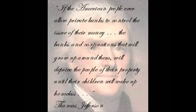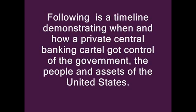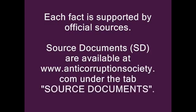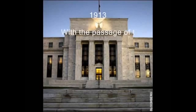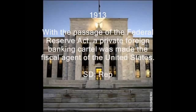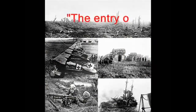If the American people ever allow private banks to control the issue of their money, the banks and corporations that will grow up around them will deprive the people of their property until their children will wake up homeless. — Thomas Jefferson. Following is a timeline demonstrating when and how a private central banking cartel got control of the government, the people, and the assets of the United States. Each fact is supported by official sources, available at www.anticorruptionsociety.com. 1913: With the passage of the Federal Reserve Act, a private foreign banking cartel was made the fiscal agent of the United States. Source: Representative McFadden, Congressional Record, June 1932.